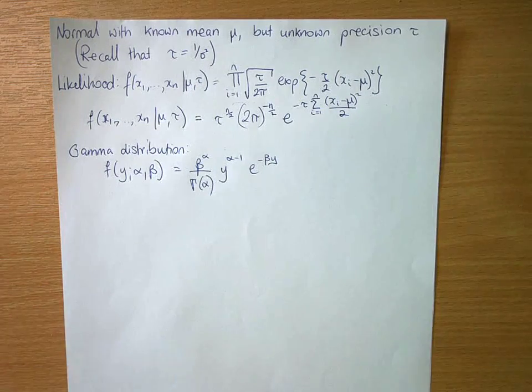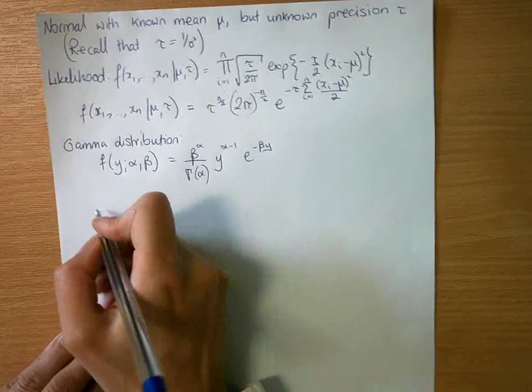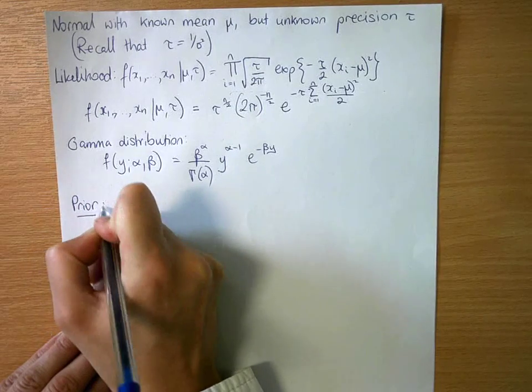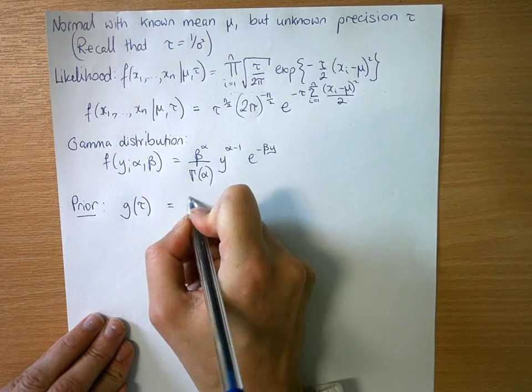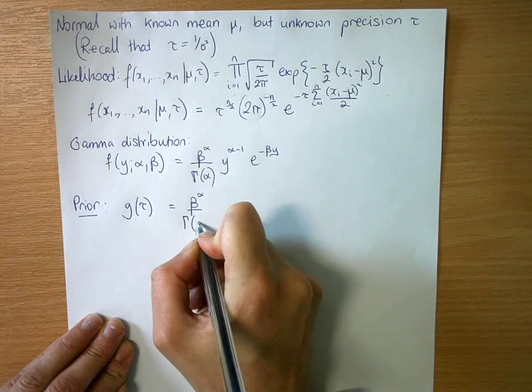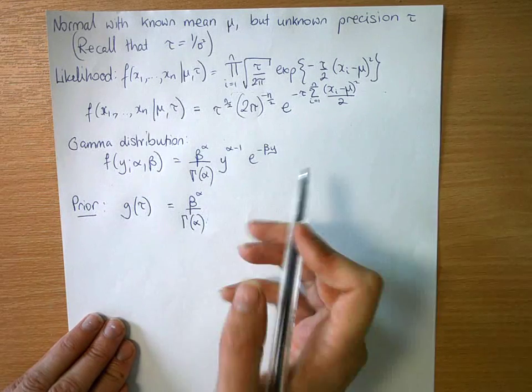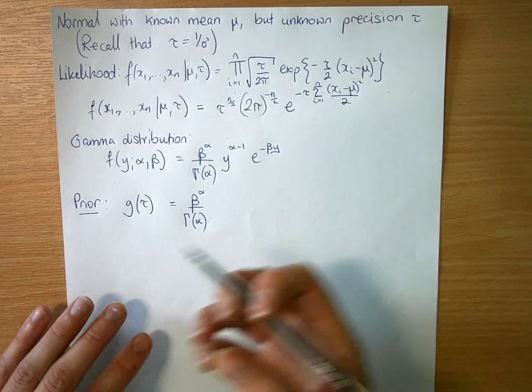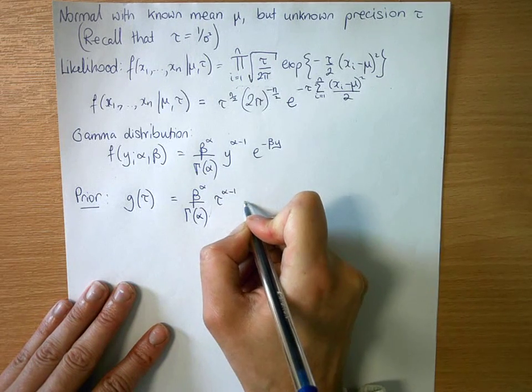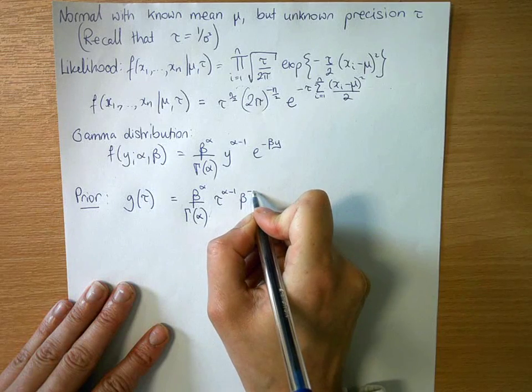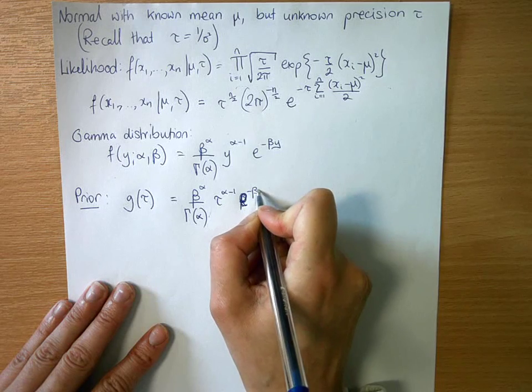In terms of our prior, our random variable is tau, so we would replace y with tau. So g(τ) is β^α over the gamma function of alpha. Again, this is constant with respect to tau, so we won't be needing to carry it throughout our calculations. Tau to the alpha minus 1, e to the minus beta tau.